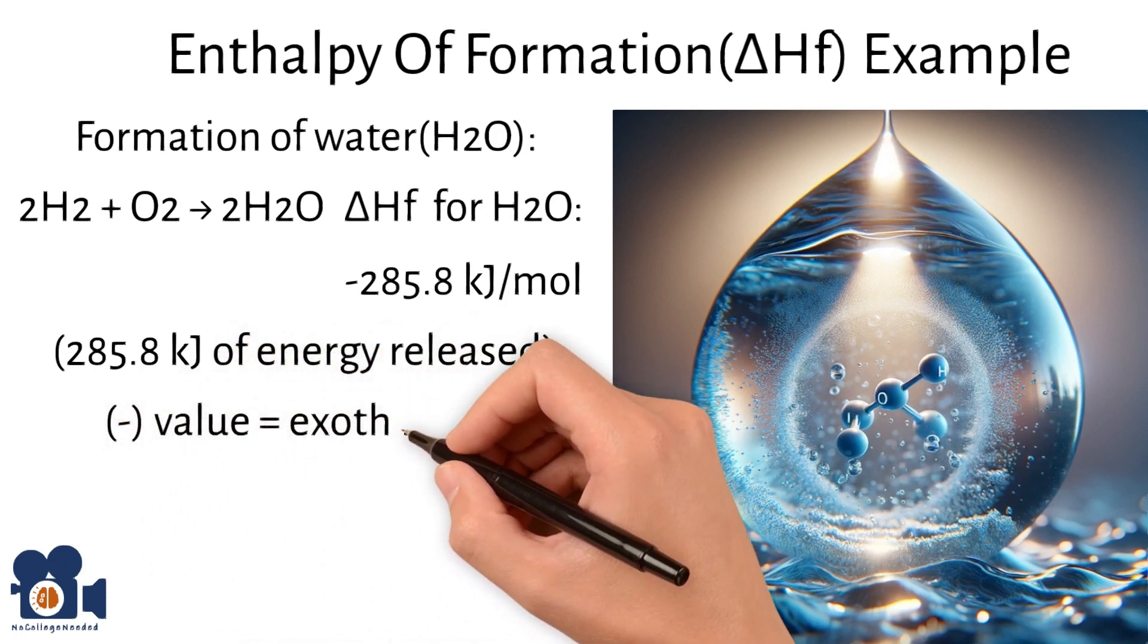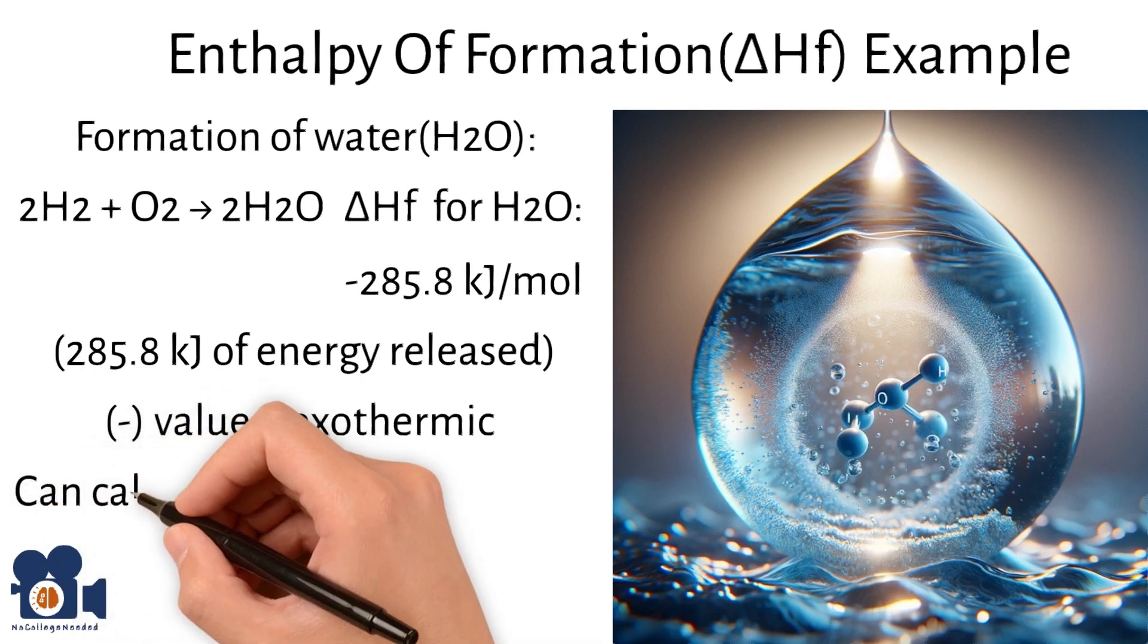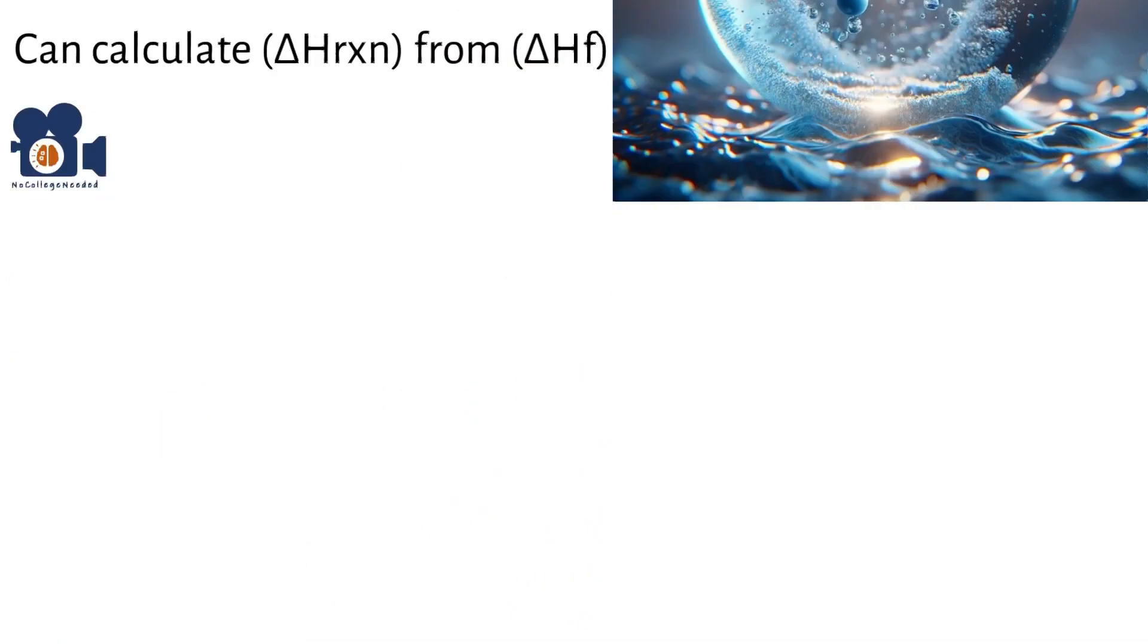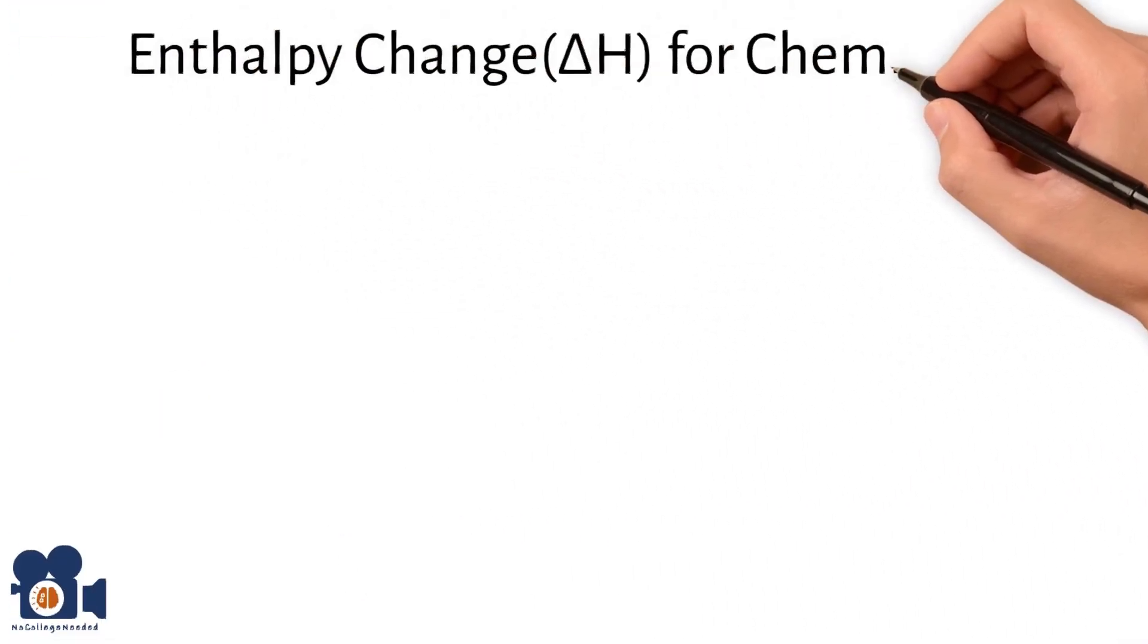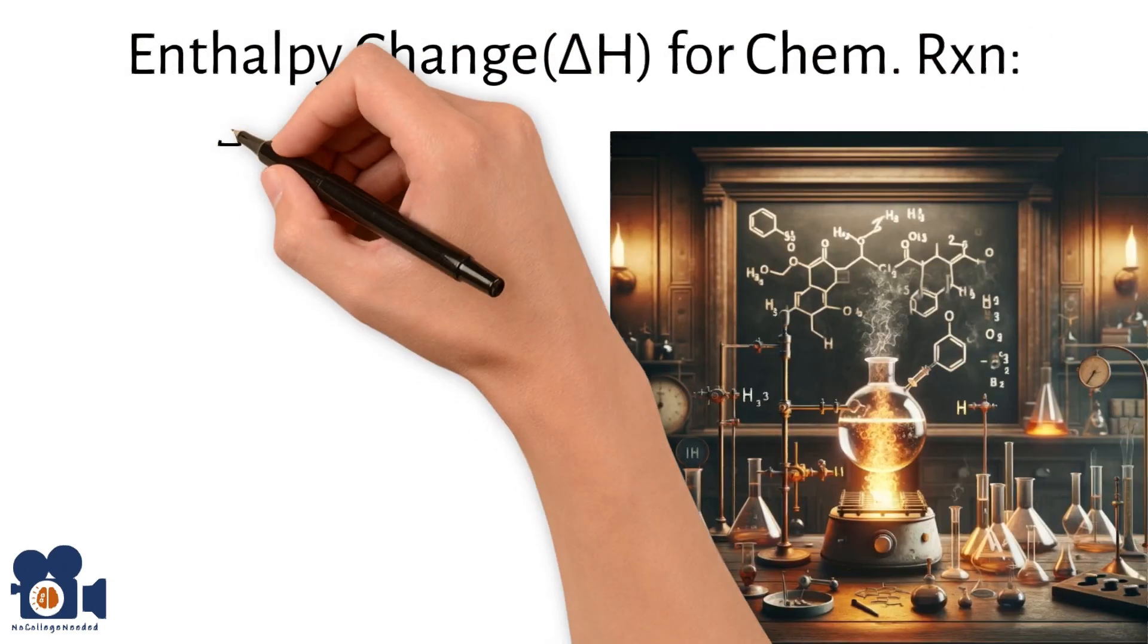This negative value signifies an exothermic reaction where heat is released to their surroundings. By the way, this is the concept behind hydrogen-powered vehicles. Considering what we know about Hess's law and that enthalpy change for a chemical reaction is the same regardless of the pathway which the reaction occurs, we can therefore calculate the enthalpy change of a reaction based on the enthalpies of formation.